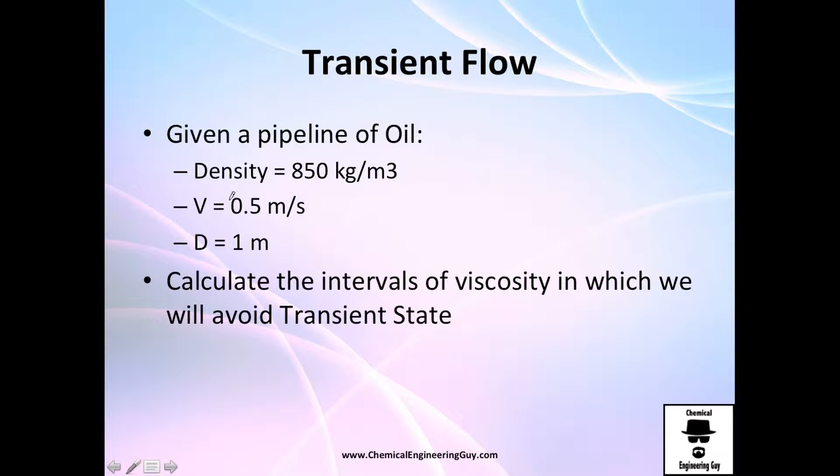Just for the sake of the exercise, let's do this. Given a pipeline of oil with this density, this velocity and this diameter, calculate the intervals of viscosity in which we will avoid transient state. As I told you, I don't want to have transient state. So how do we do that?